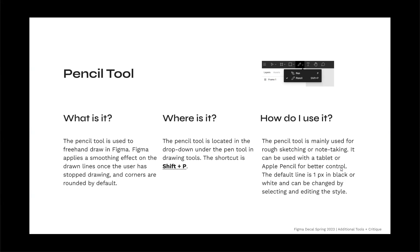The pencil tool is mainly used for rough sketching or note taking, and it can also be used with a tablet or Apple Pencil for better control. The default line is one pixel in black or white and can be changed by selecting and editing the style. It's helpful when you want more organic-looking lines than the pen tool, but still want it to be a vector.